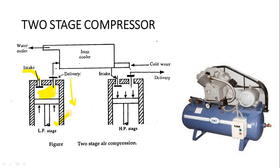When the piston again moves from BDC to TDC — from bottom dead center to top dead center — as the crank rotates, the air trapped in this area gets compressed. High pressure is generated as the piston exerts force on the air, and high-pressurized air moves out from the delivery stroke. The delivery valve opens and high-pressurized air enters the intercooler.